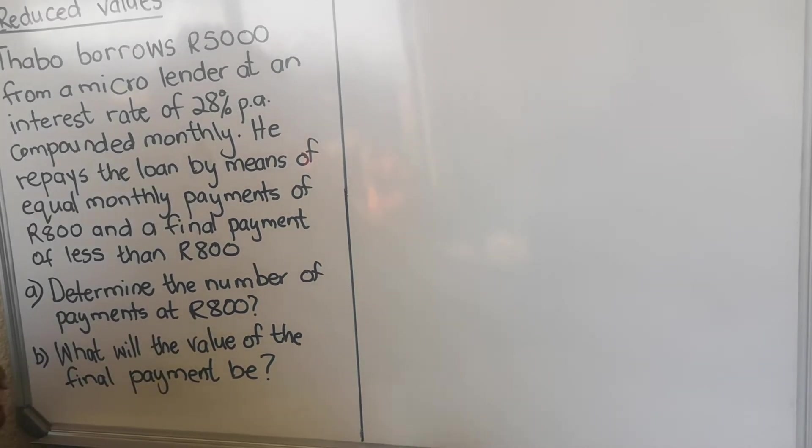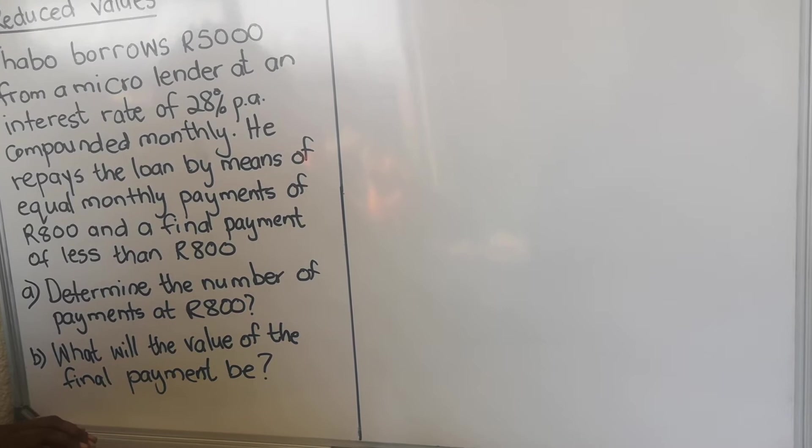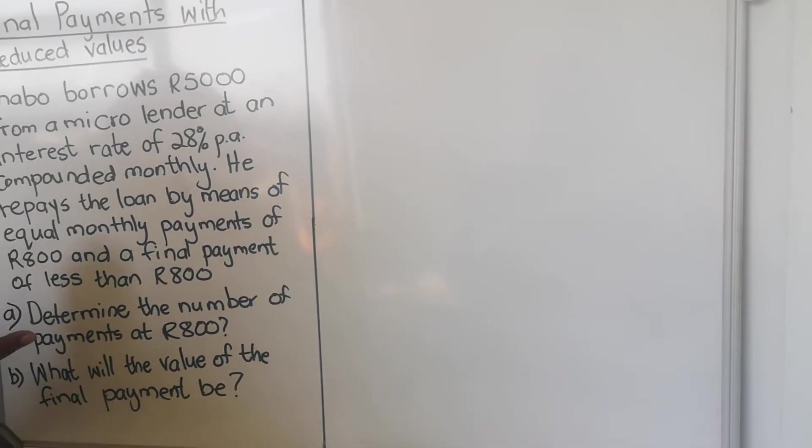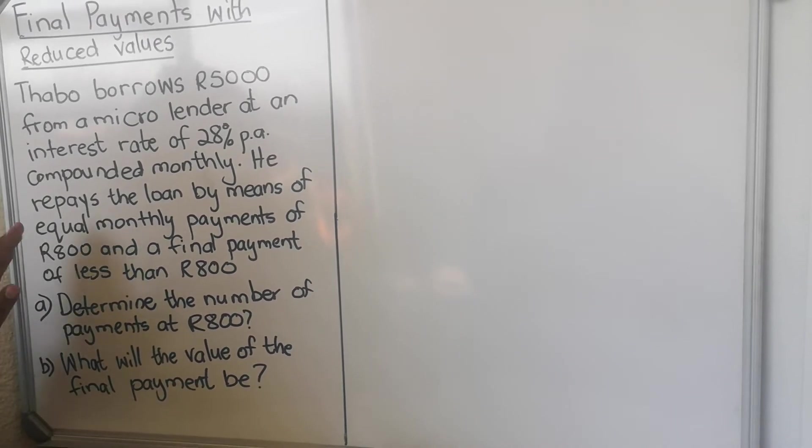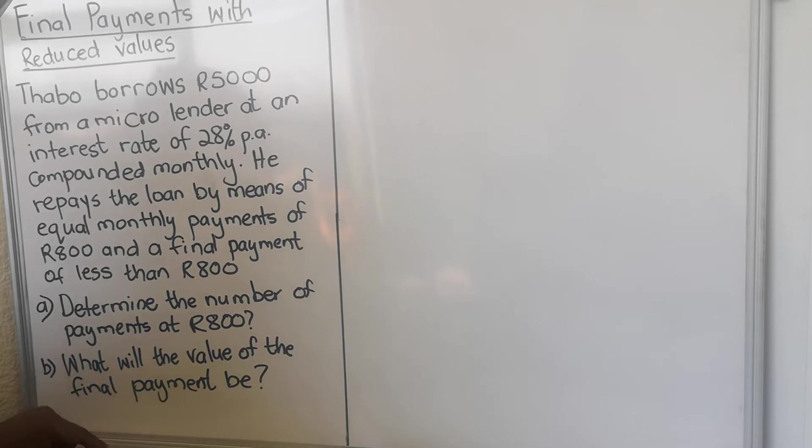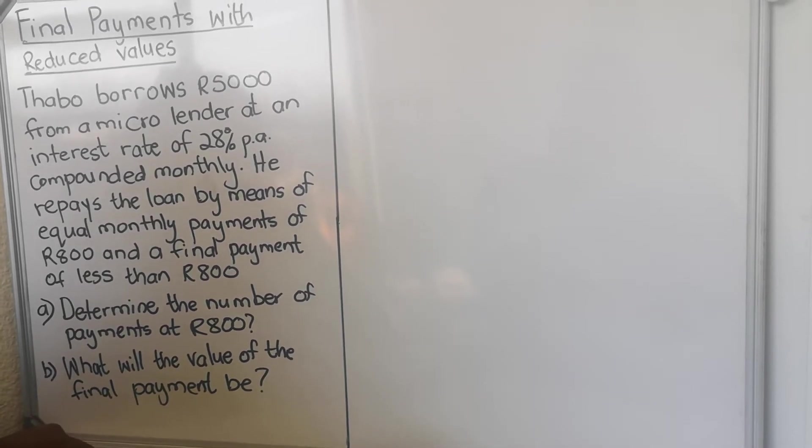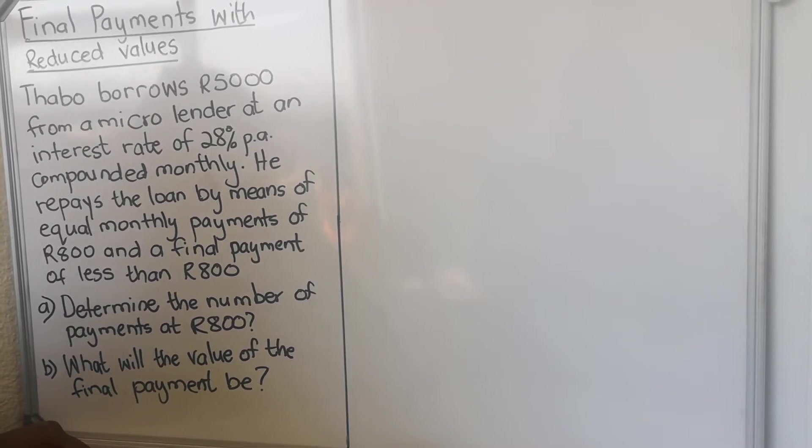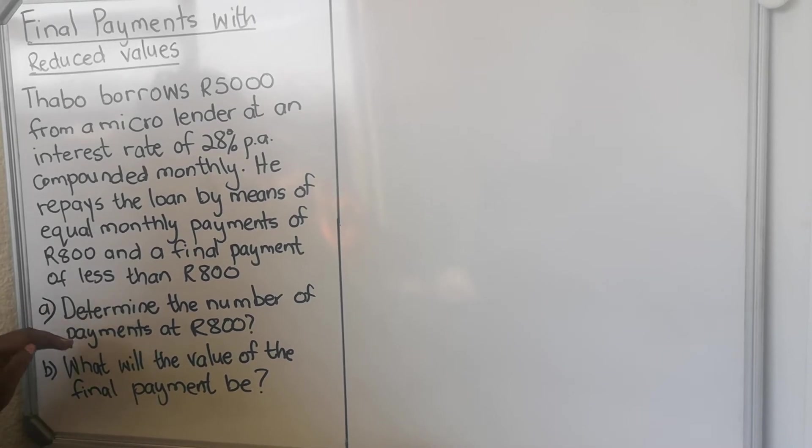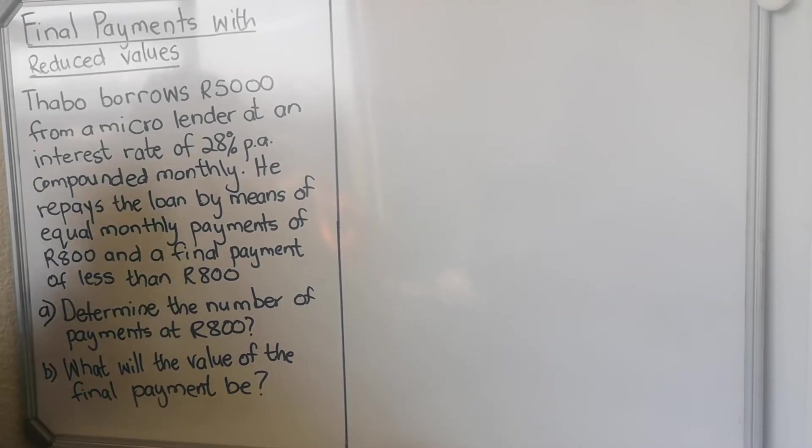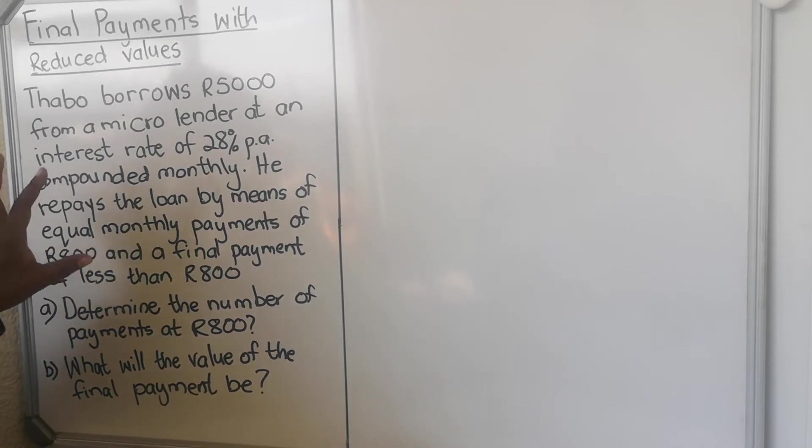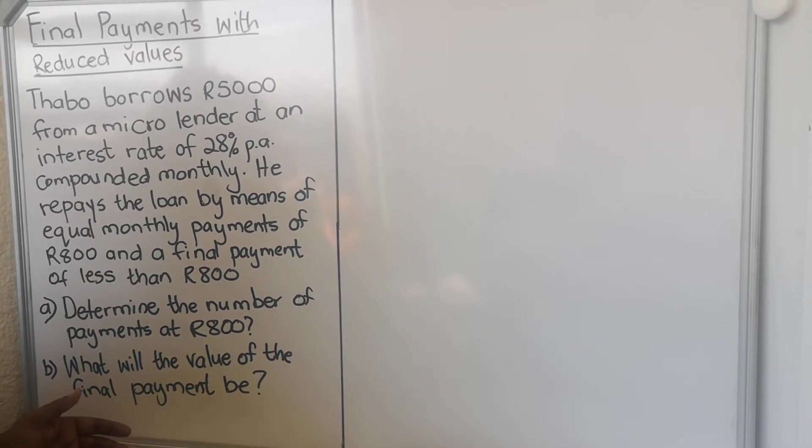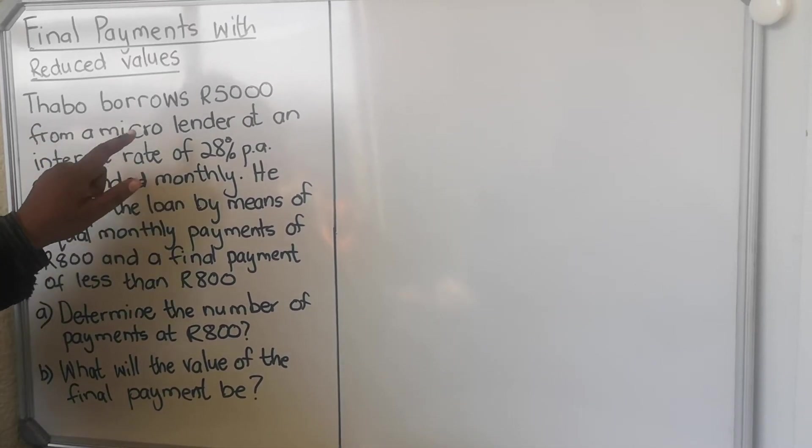The first question says determine the number of payments of R800. How many R800 payments will he make? Now with the Grade 12 questions, you need to remember which formula to use. When you borrow, you need money now - present - you use the present value. When you go to your formula sheet, the present value has a P. When you put money away, you're going to need the money in the future, so it's the future value. The formula has an F. Once you choose the wrong formula, you lose a lot of marks.